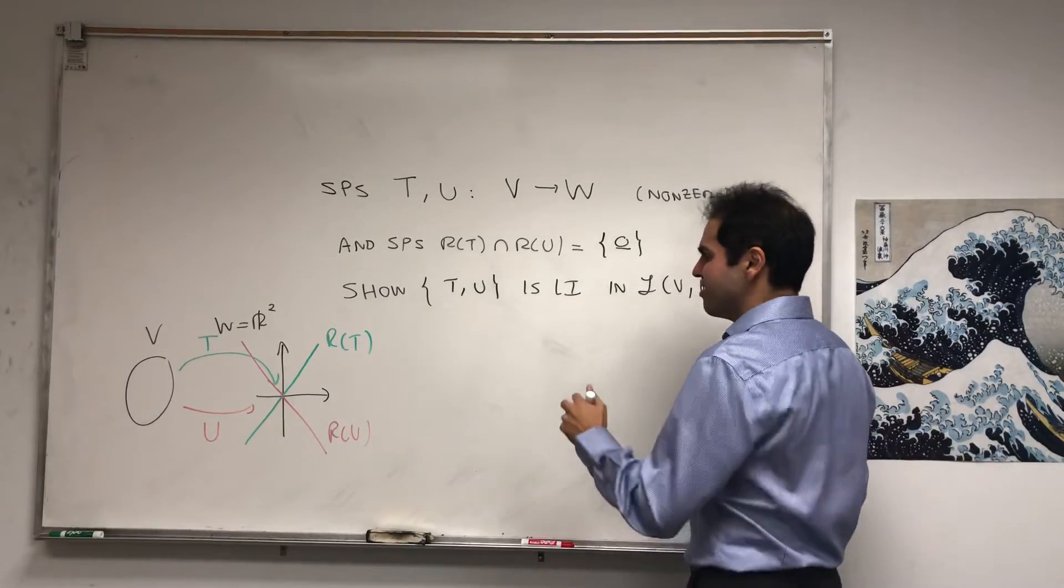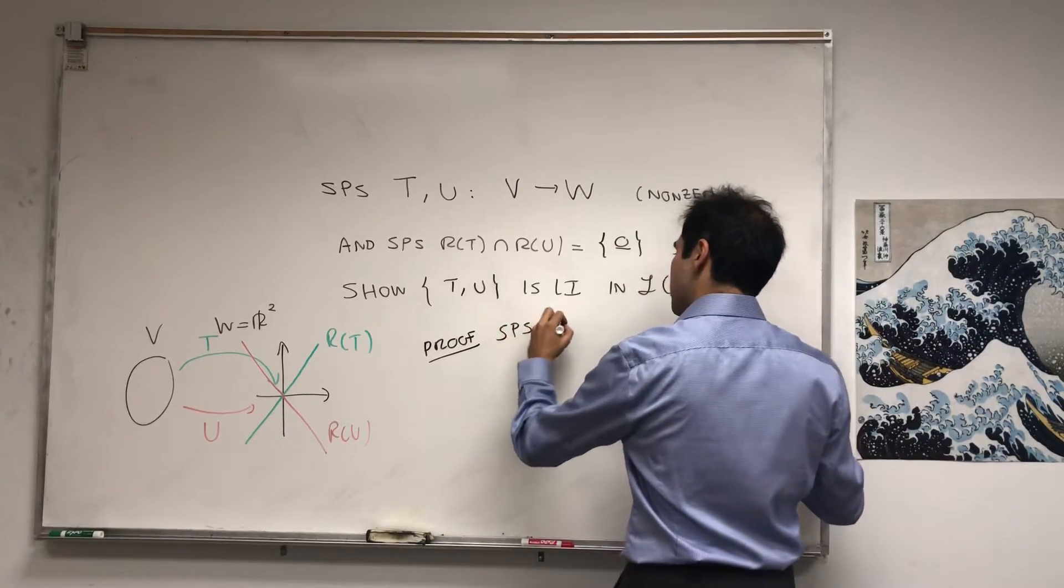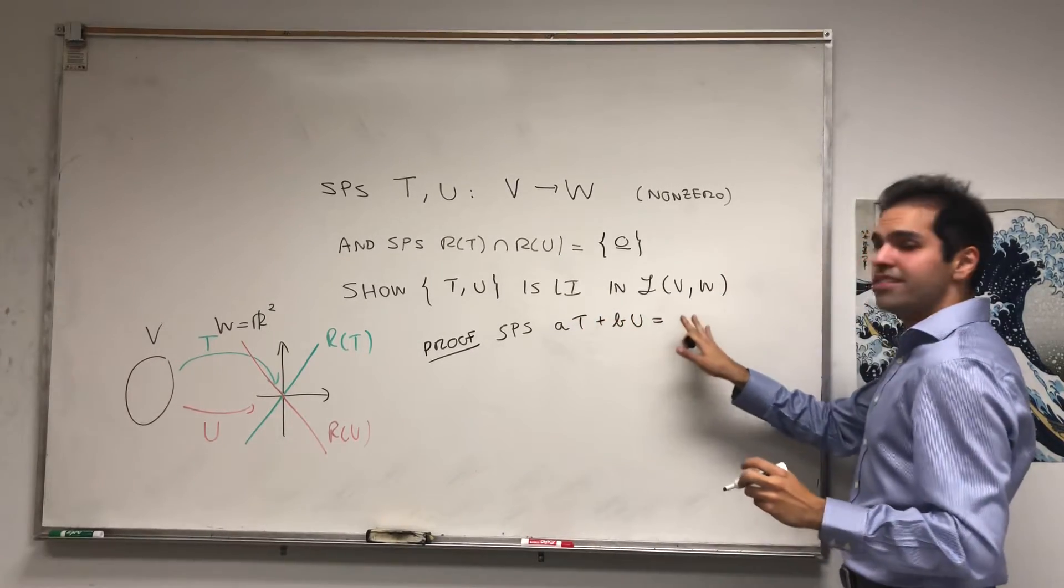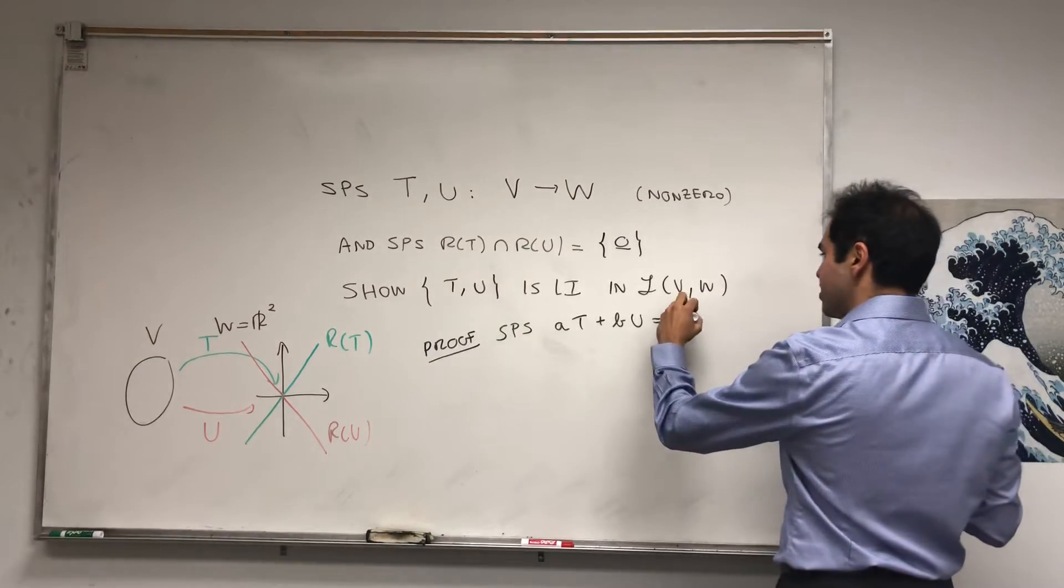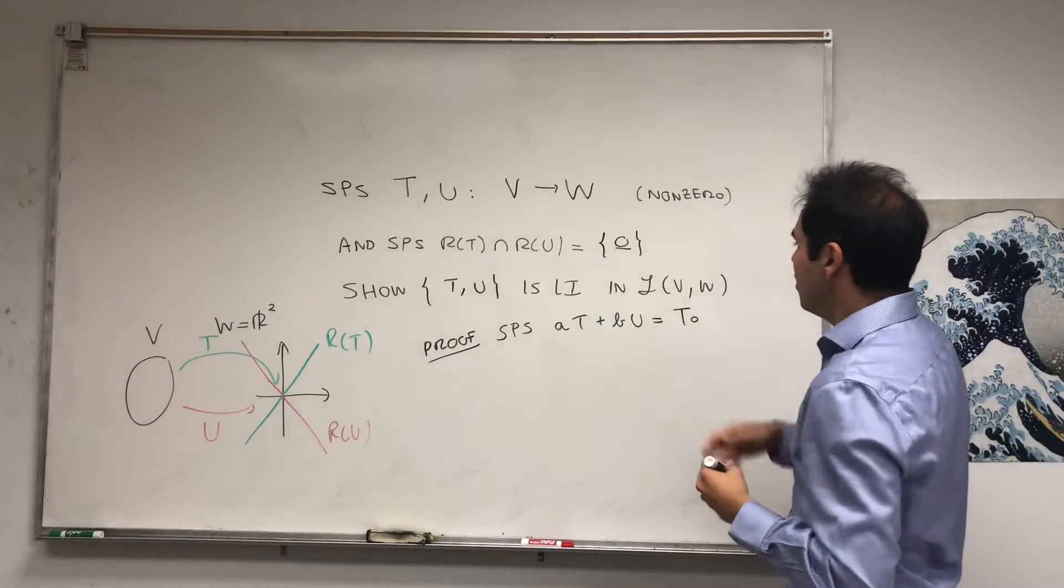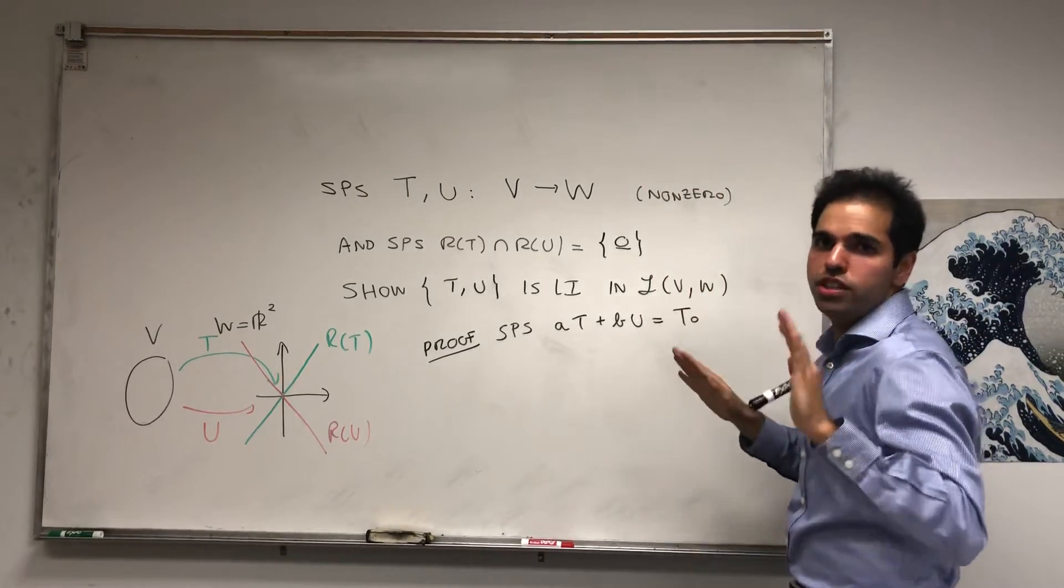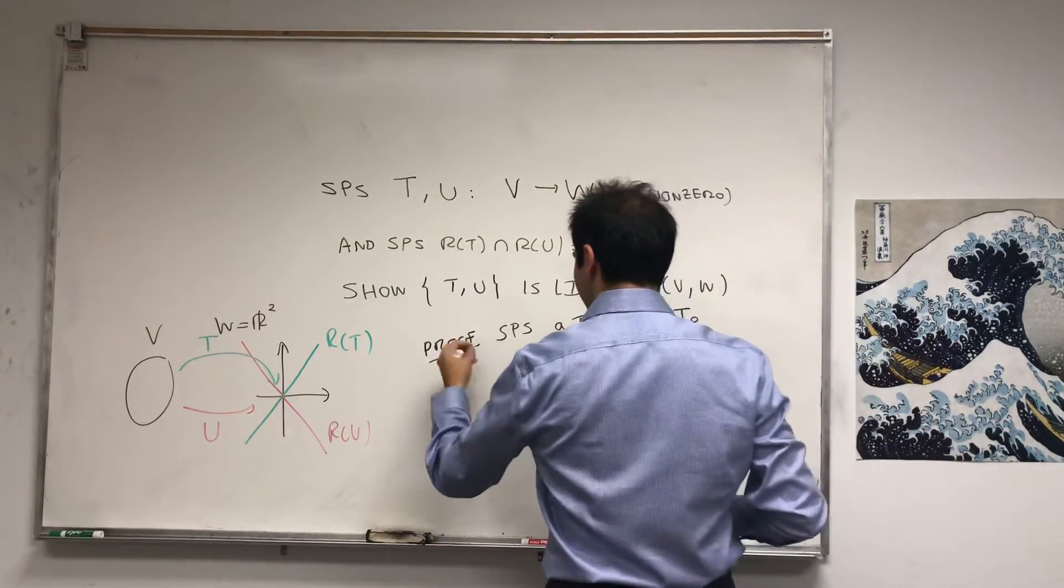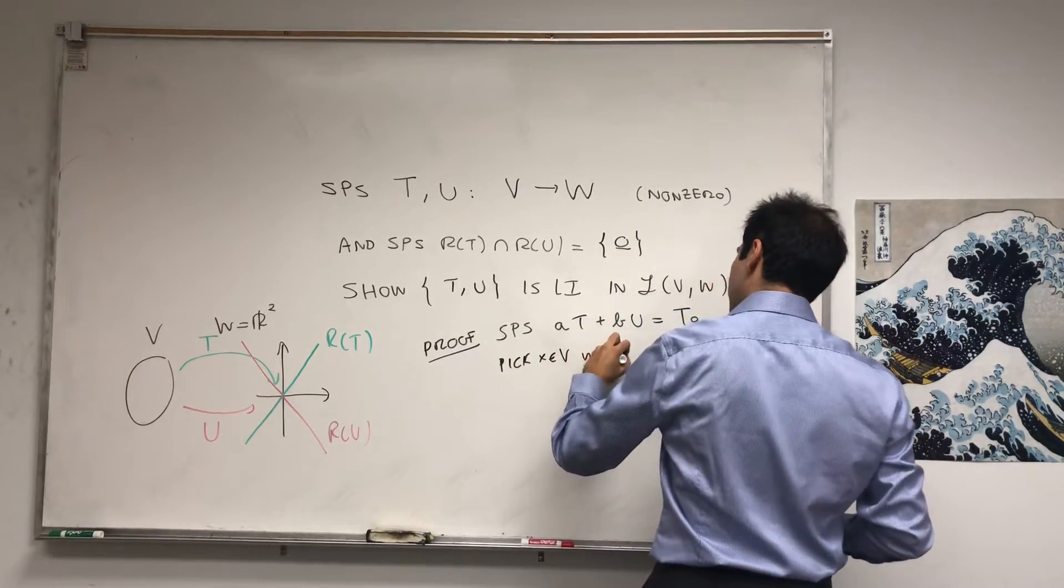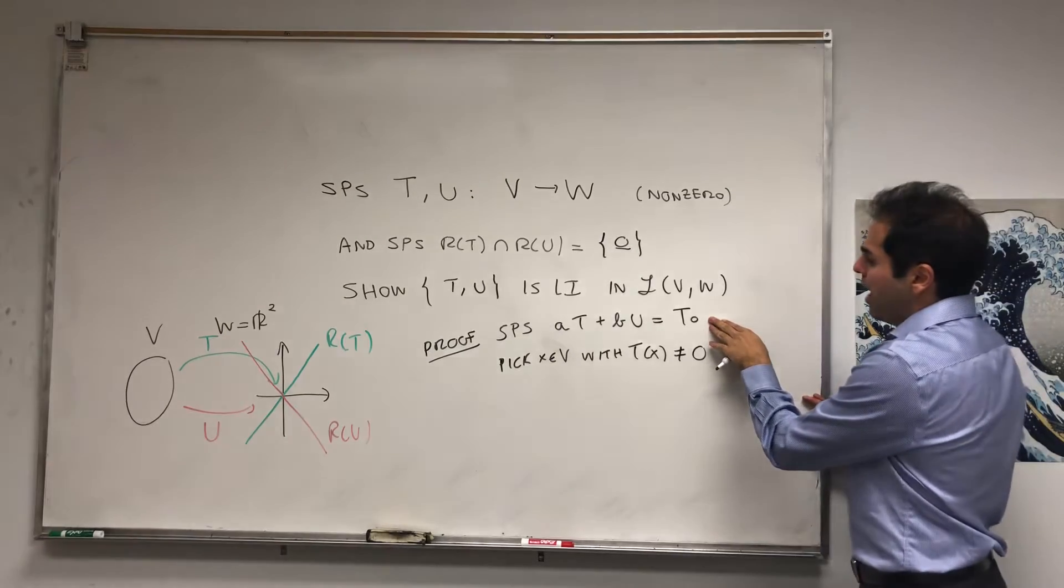So how do you show this is linearly independent? Proof: Suppose that, for example, AT plus BU equals the zero vector - but here it's the zero vector in the space of linear transformations, so it's the zero linear transformation. And remember that T and U are nonzero. So in particular, there's a vector for which T of X is nonzero. So then pick X with T of X nonzero.